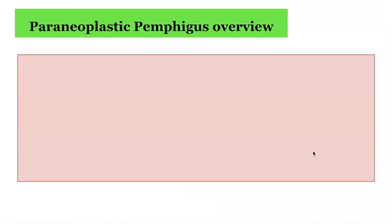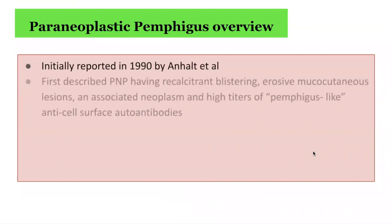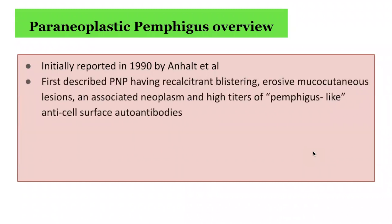In terms of an overview of paraneoplastic pemphigus, it was initially reported in 1990 by Dr. Anhalt et al. They first described paraneoplastic pemphigus as having recalcitrant blistering, erosive mucocutaneous lesions, and an associated neoplasm, with high titers of pemphigus-like anti-cell surface autoantibodies.